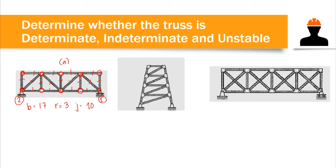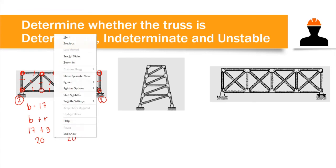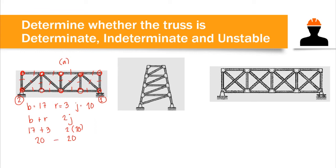Using the condition B plus R equals 2J: we have 17 plus 3 on the left side, and 2 times 10 on the right side. That gives us 20 on both sides. Since they are equal, this structure is statically determinate.